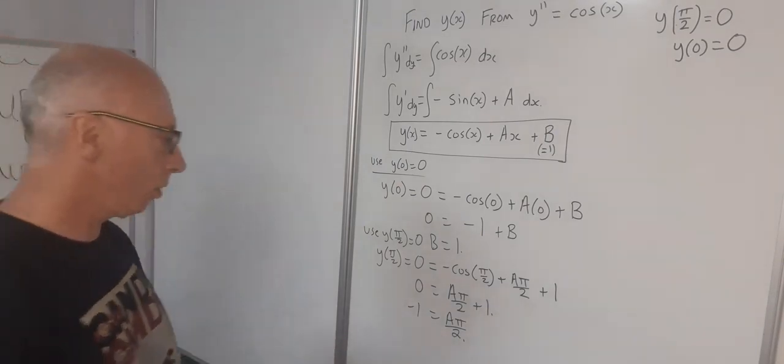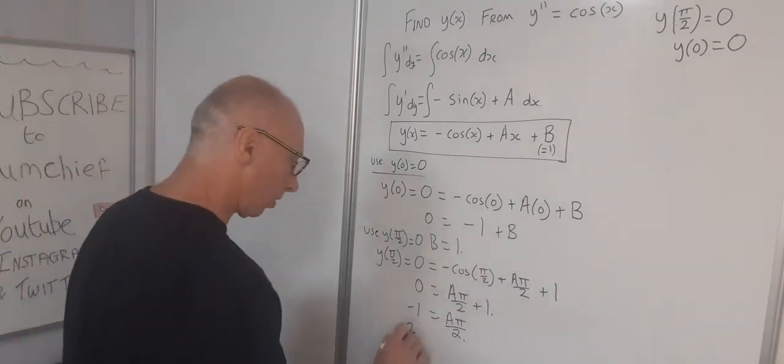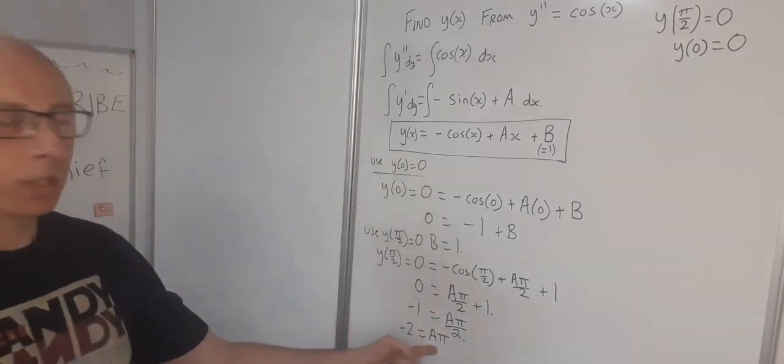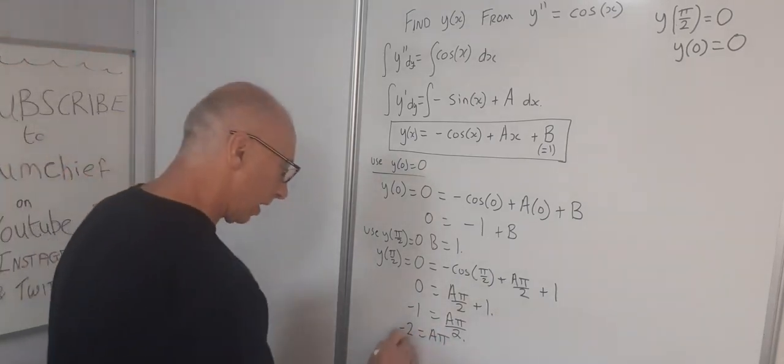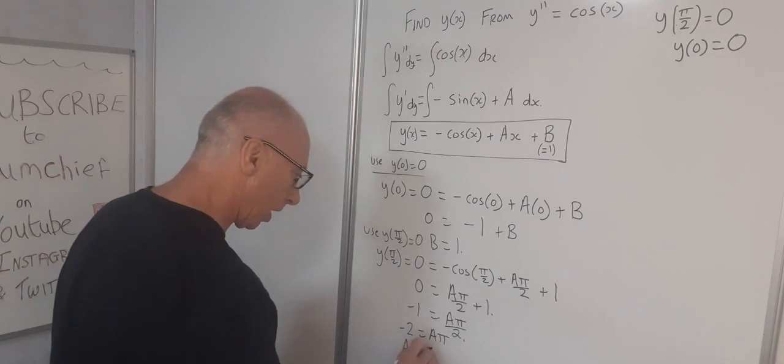Minus 1 equals a pi over 2. Multiply both sides by 2. So now we've got minus 2 equals a pi. And now we can solve for a. A equals minus 2 over pi.